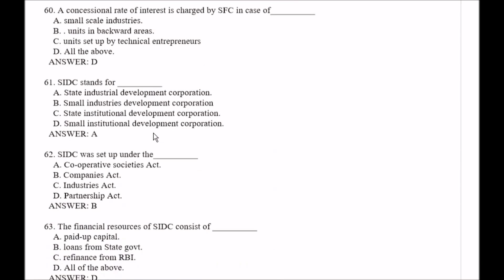Question number 60: A concessional rate of interest is charged by SFC in case of — Option A, small scale industries; Option B, units in backward areas; Option C, units set up by technical entrepreneurs; Option D, all of the above. The right answer is Option D, all of the above.